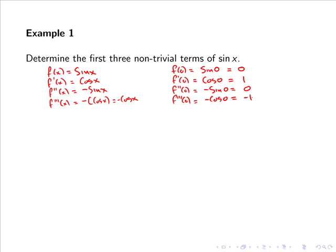So now we've calculated two non-zero terms. Calculating the next derivative, we have f⁴(x) equals minus times the derivative of cos x, so minus minus sin x, which gives us sin x. Evaluating this at 0, f⁴(0) equals sin 0, which equals 0.